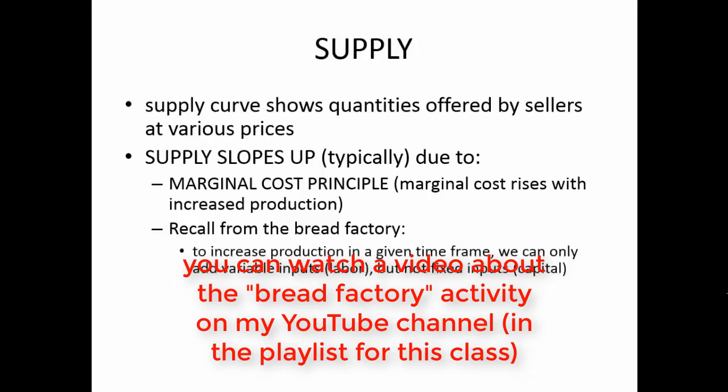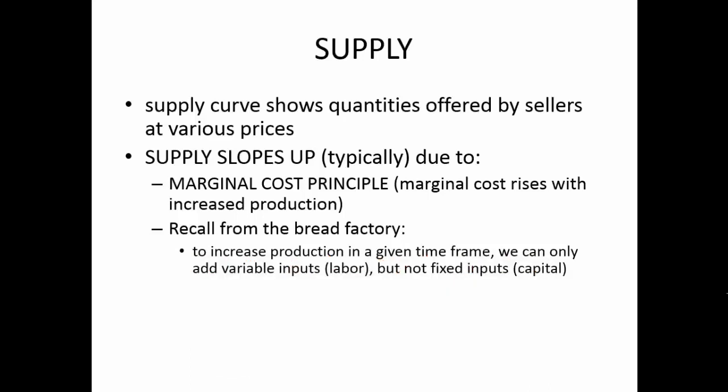What we do is we only increase one input — we only increase the number of workers. We hold everything else constant. And what we see is that we can get more bread produced, but the extra production we get from adding extra students gets less and less. This is called diminishing marginal productivity.